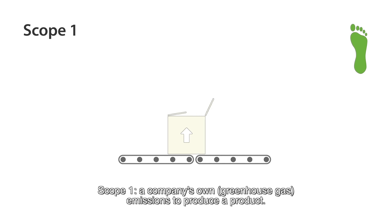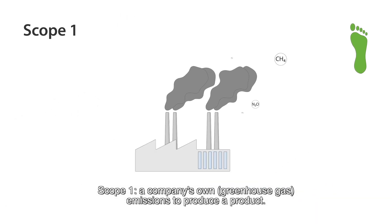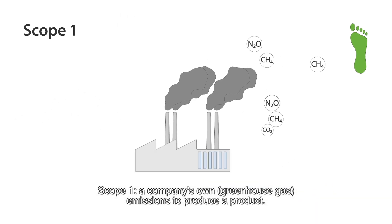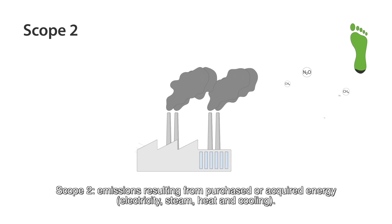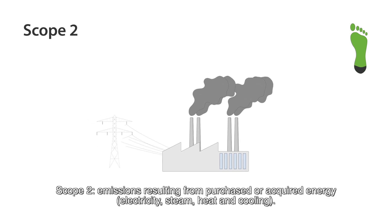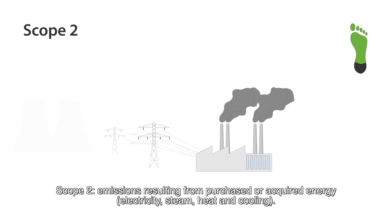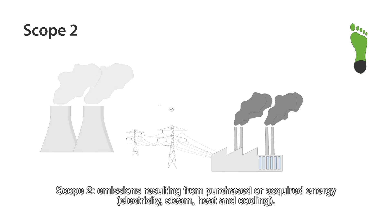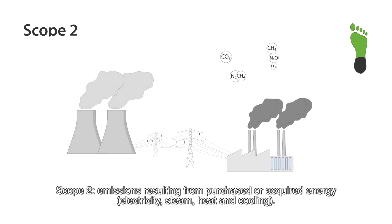Scope 1: a company's own greenhouse gas emissions to produce a product. Scope 2: emissions resulting from purchased or acquired energy, electricity, steam, heat, and cooling.